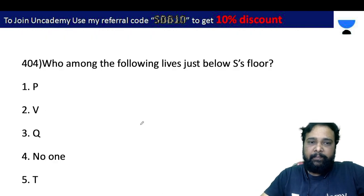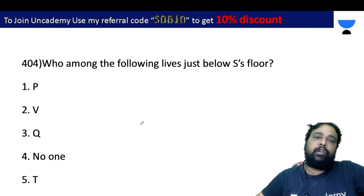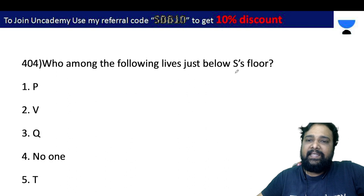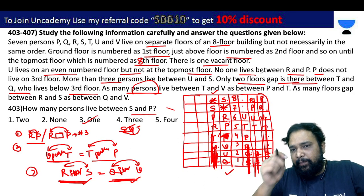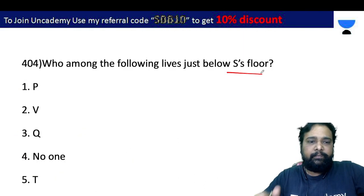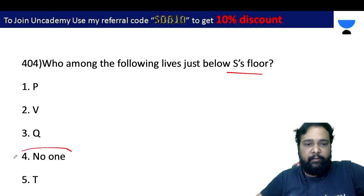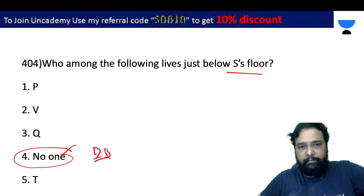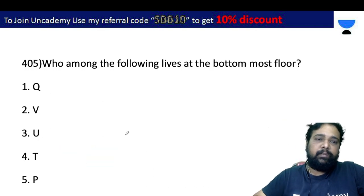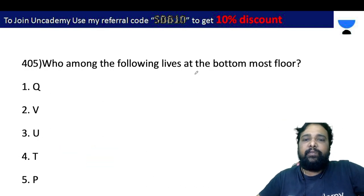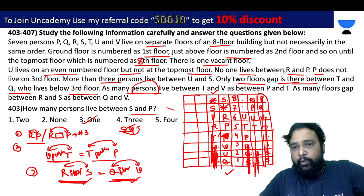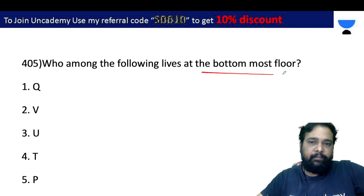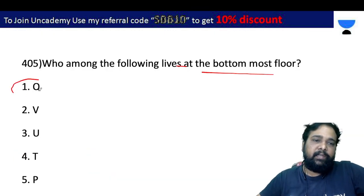Next, problem 404: Who among the following lives just below S's floor? Just below S, there is no one — it is the vacant floor. So the answer is D, the fourth option. Next, problem 405: Who among the following lives on the bottommost floor? The bottommost floor — Q is there. Our answer is option A. Only Q is the right answer for problem number 405.